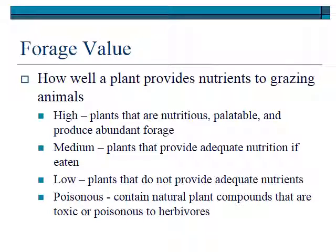Forage value describes how plants provide forage for livestock and wildlife. A plant is high in forage value if it's very nutritious, palatable, and abundant. Plants of medium forage value provide adequate nutrition but may not be terribly abundant or palatable. Low forage value plants are not very high in nutritive value or are not very abundant — they don't have very large leaves and can't support animals well. Poisonous plants are a separate set that contain natural compounds toxic to herbivores. Sometimes they also have nutritive value, but because of those toxic compounds, they are considered poisonous — a special subset of forage value.